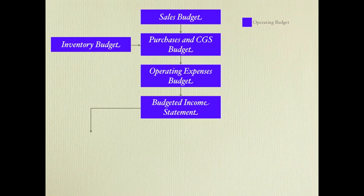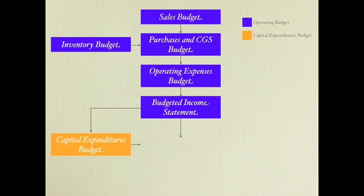That makes up the first set of budgets called the operating budget. The second part of the master budget is the capital expenditures budget, which is really just one part on its own. The capital expenditures budget is what we plan to invest in — capital expenditures being depreciable assets like buildings or equipment. So if we plan to invest in the future, in what way and how much would be part of our capital expenditures budget.